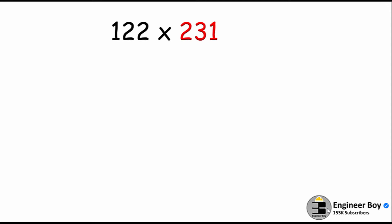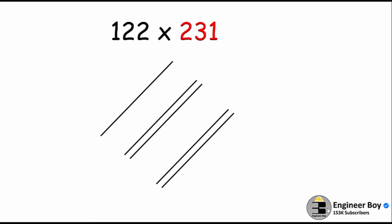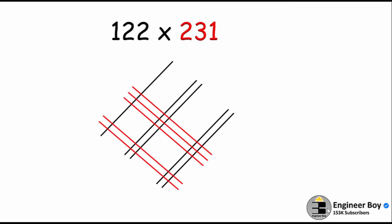You can do that with even bigger numbers, like 122 times 231. I'll draw one line in one direction, leave some space, draw two lines for the 2, leave some space, draw two more lines for the next 2. Then draw lines for the other number in the other direction — make sure you draw from the bottom — two, three, and one. Split the diagram and count: we have two intersections in one place, then eight in another, at the middle four plus six equals 10.